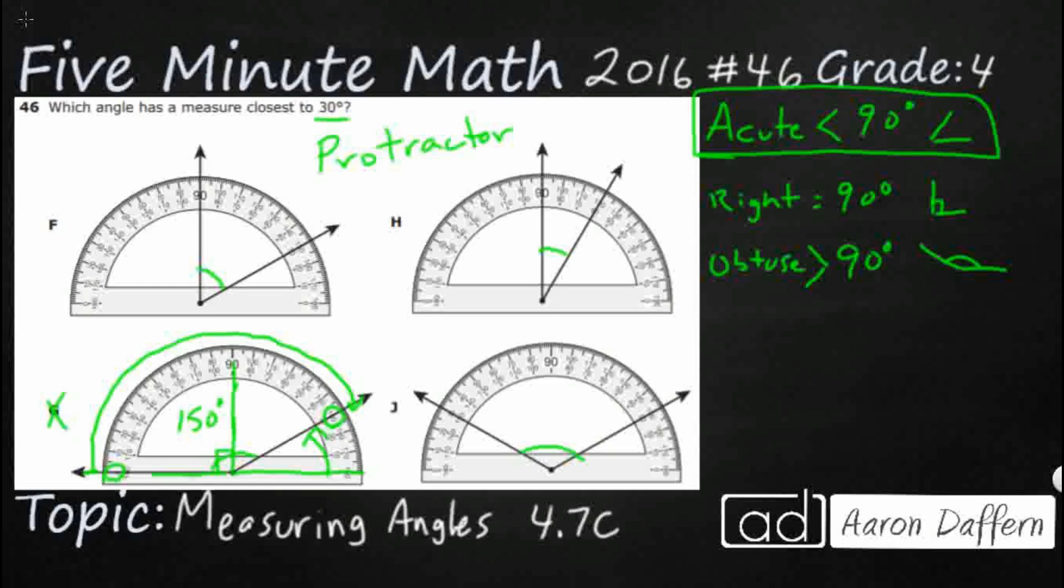And then J doesn't start on any zero. So we can just pick inside or outside. Let's pick outside. See what happens. I'm going to start with 30. And 30 goes all the way up to 150 as well. So I'm just going to subtract the two. I'm going to say 150 minus 30. And that gets me 120 degrees.